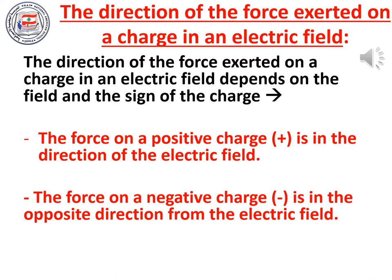The direction of the force exerted on a charge in an electric field depends on the field and the sign of the charge. Whenever we put a charge in an electric field, the force acting on it depends on two things: the direction of the electric field and the sign of the charge. If the charge is positive, the force is in the same direction as the electric field. If the charge is negative, the force is in the opposite direction.